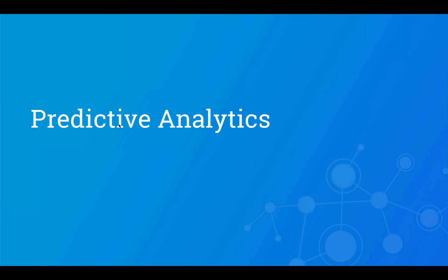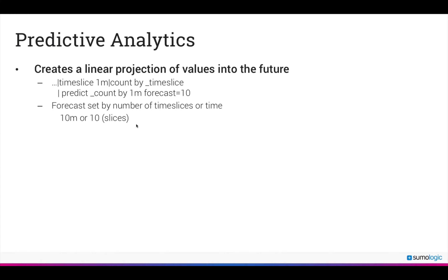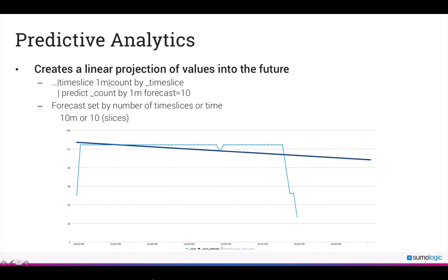The Sumo Logic predict operator uses a series of timestamped numerical values to predict future values. You can count values over a time slice and then project what the value would be 10 data points into the future, shown as a deep blue line in the diagram. The forecast parameter can be a simple number such as forecast equals five, which predicts five data points in the future, or forecast equals 10. It can be time-based, and if you don't specify a value, the operator defaults to three data points into the future.